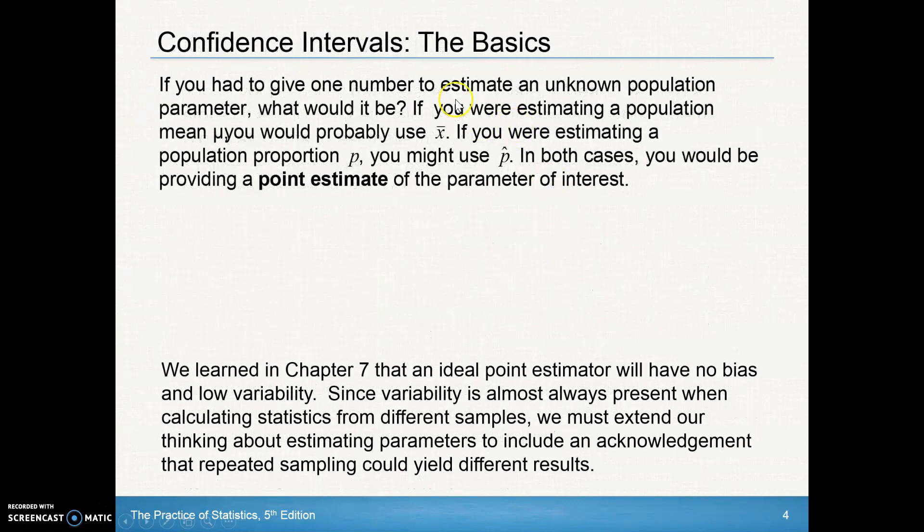If you had to give one number to estimate an unknown population parameter, what would it be? If you were estimating a population mean mu, you'd probably use x-bar. That just kind of makes sense. If you wanted to estimate the true population mean, you'd take a sample, find the mean of that, and say that's probably your best guess. If you're estimating a population proportion p, you might use p-hat. In other words, you might take and find some proportion, do your own little sample and find your own p-hat, and then say, that's my best estimate of the true population parameter p.